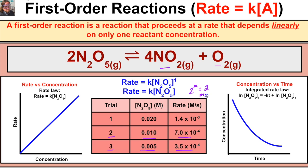Two to what power equals two? m equals one. So the order of our reactant — and therefore our entire reaction since we only have one reactant — is one. The rate law is: rate = k × [N2O5]. If we double the concentration, the rate also doubles. If we graph this rate law it's going to be linear — if the concentration doubles the rate doubles, if it decreases by half the rate decreases by half.